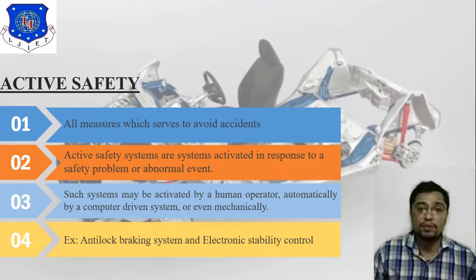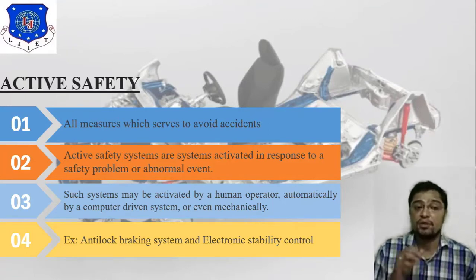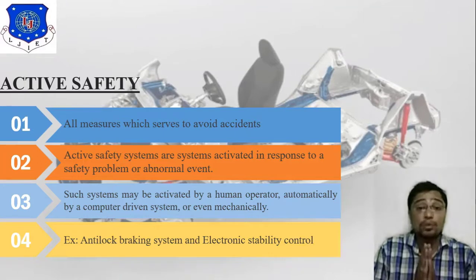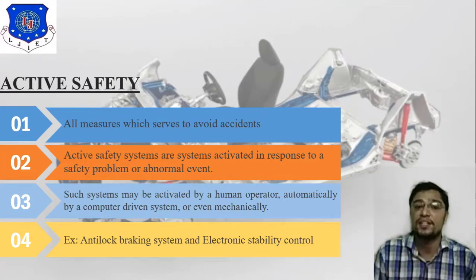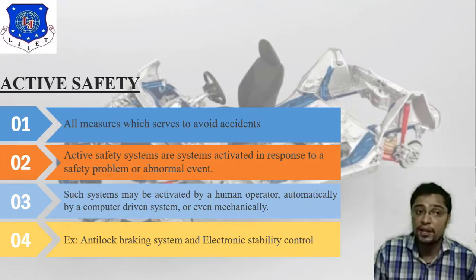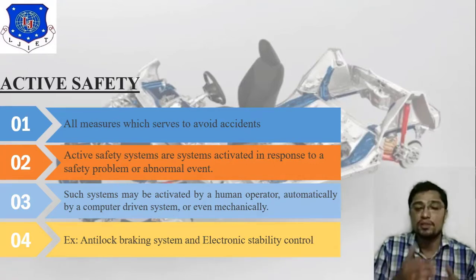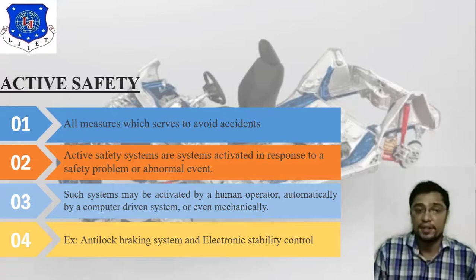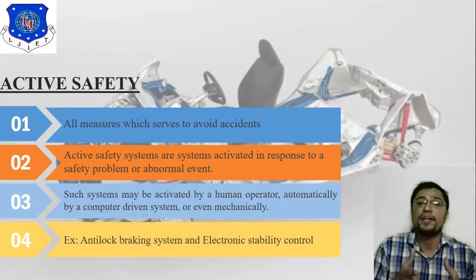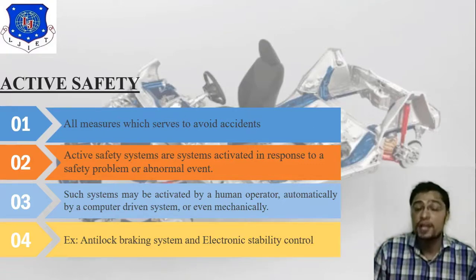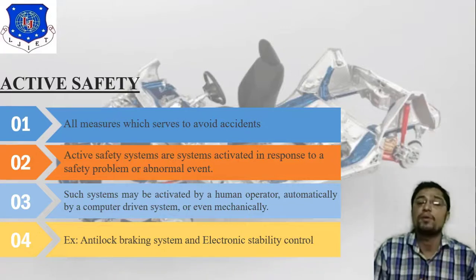Examples of active safety include two main ones: anti-lock braking system and electronic stability control. All these criteria are addressed before the accident — that is what active safety is. In simulation we take care of different forces and different spare parts.